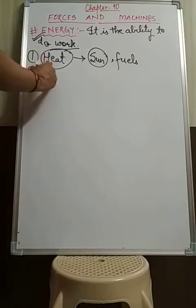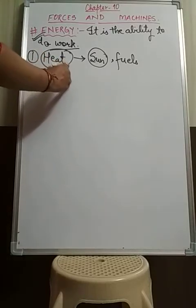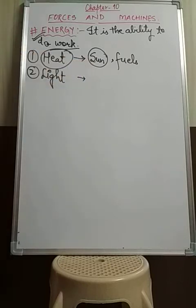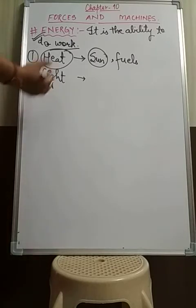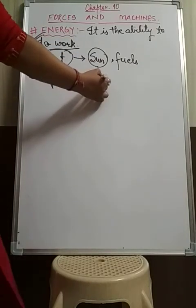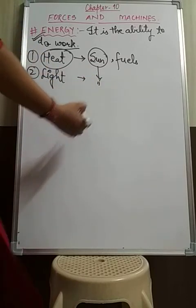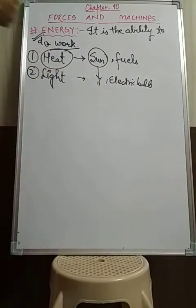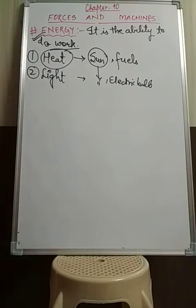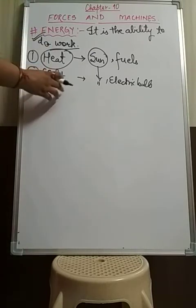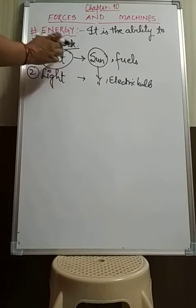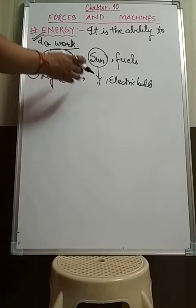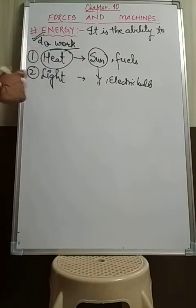The next form of energy is light energy. When you turn on a tube light or a bulb, light comes out — that is light energy, and it helps us to see things. Sources of light energy include the sun, electric bulbs, tube lights, candles, torches, and lanterns. One important thing: if any substance gives you light, it will ultimately give you heat also. So most sources of light are also sources of heat energy.